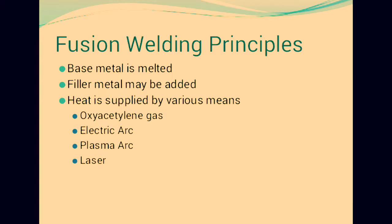Fusion welding has some principles. First, the base metal is melted during welding. Second, a filler metal may be added. Third, heat is supplied by various means — we use some sources for heating, like oxyacetylene gas, electric arc, plasma arc, and laser. These are the sources for generating heat.